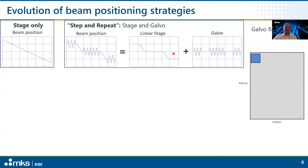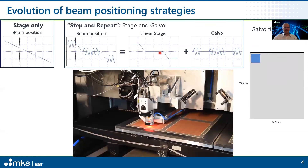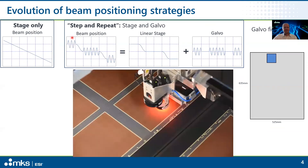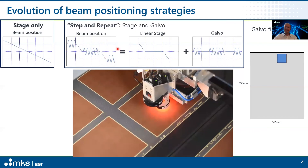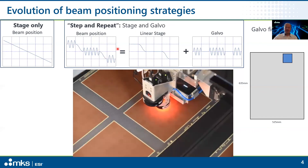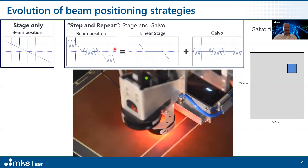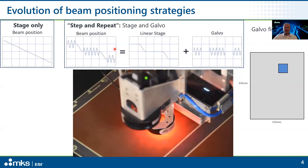The next step you'll all be very familiar with: this is the famous step and repeat process. You have a galvo scanner and you process everything within that scan field, and then your linear stage moves from one place to another, creating your combined beam positioning trajectory. This is very widespread and very popular to this day.